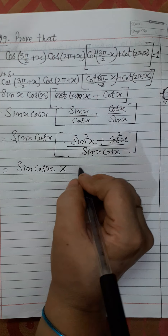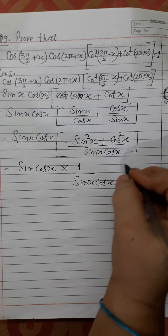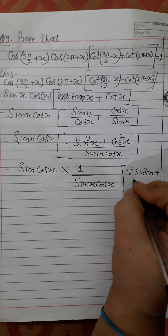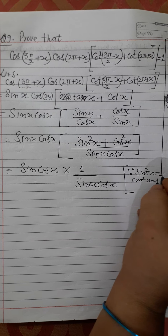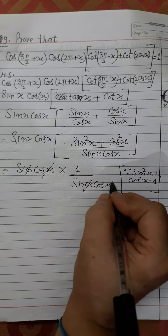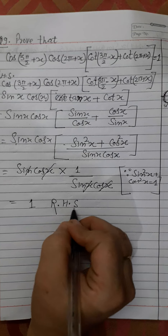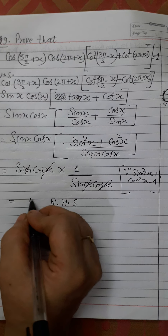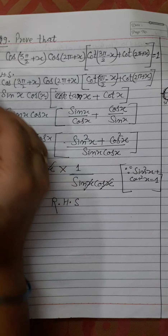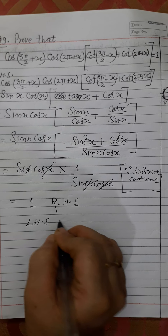Applying the Pythagorean identity sin²x + cos²x = 1, the entire expression simplifies to 1. That is equal to the right-hand side. We started from the left-hand side and reached the right-hand side, so left-hand side is equal to right-hand side. The trigonometric expression is proved.